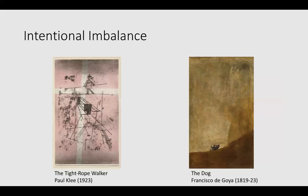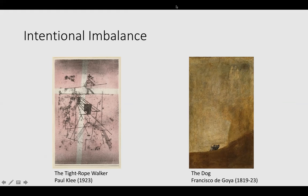Finally, I'm going to leave you with these images. It's quite appropriate for a lecture called Walking the Tightrope to end with a tightrope walker — a good example of intentional balance by Paul Klee. And another favourite of mine is one of Goya's black paintings in the Prado in Madrid, called The Dog — sometimes called The Drowning Dog, but usually just referred to as The Dog. So that is how balance works in paintings. That's the theory of it. Now you've got to do it in practice. I very much look forward to seeing what you are able to produce. Thank you very much for listening. Goodbye.